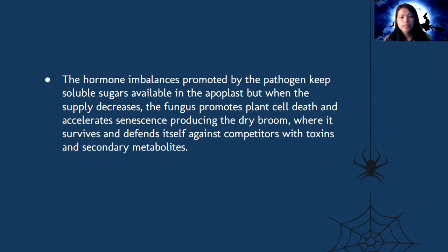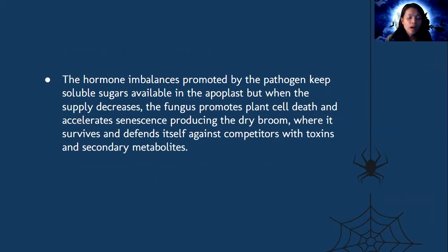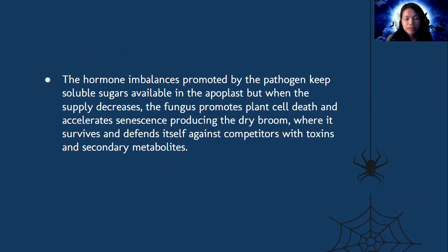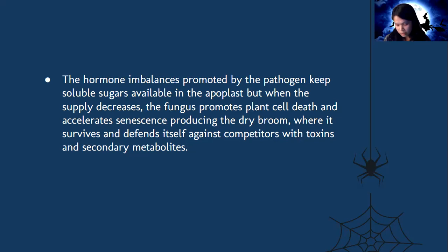The hormone imbalances promoted by the pathogen keep soluble sugars available in the apoplast. But when the supply decreases, the fungus promotes plant cell death and accelerated senescence, producing the dry broom, where it survives and defends itself against competitors with toxins and secondary metabolites. The fungus diverts the plant's energy away from effective growth and eventually causes cell death. The spores spread so easily that crops can quickly become reinfected.